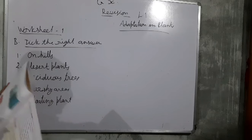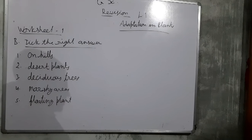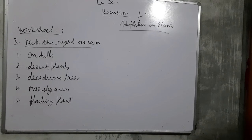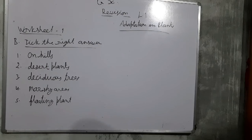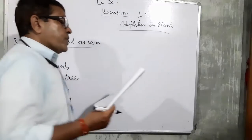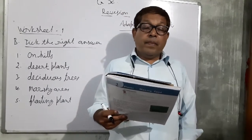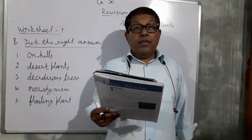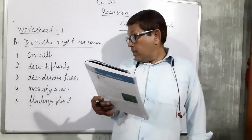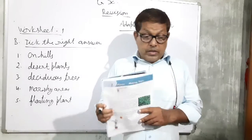Once again, let's review: First, tall and straight trees with needle-like leaves are found on hills. Second, leaves are modified into spines in desert plants. Third, trees in plains are called deciduous trees. Mangroves are plants of marsh areas. Duckweed is a type of aquatic floating plant.